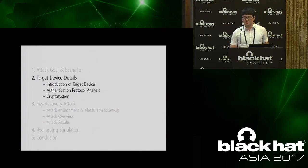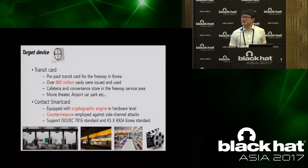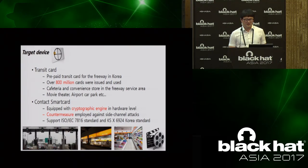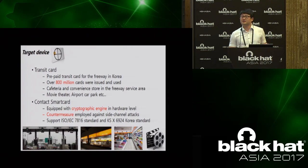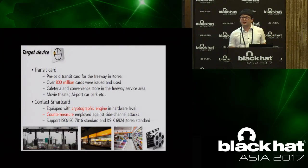Next is the detailed specification about the target device. Our target device is a transit card used for paying the toll fee for the freeway in Korea. Over 800 million cards have been issued and used. We can also use it in cafeterias and convenience stores located on the freeway. Recently, places where you can pay with this card are increasing, such as movie theaters and airports. This card is a contact smart card equipped with a cryptographic hardware engine, and countermeasures are employed against side channel attacks. This card supports ISO IC standard and KSX Korea standard, and with these documents we could get detailed information about this card.